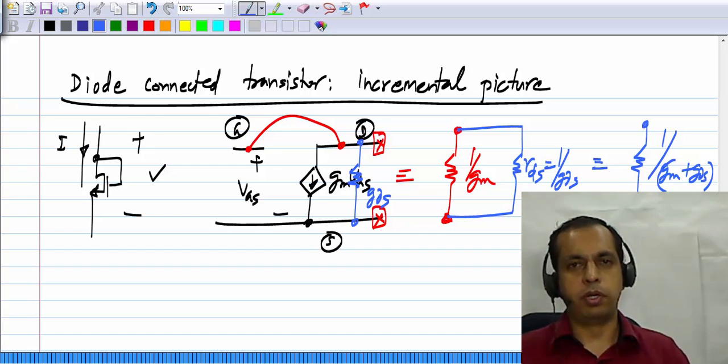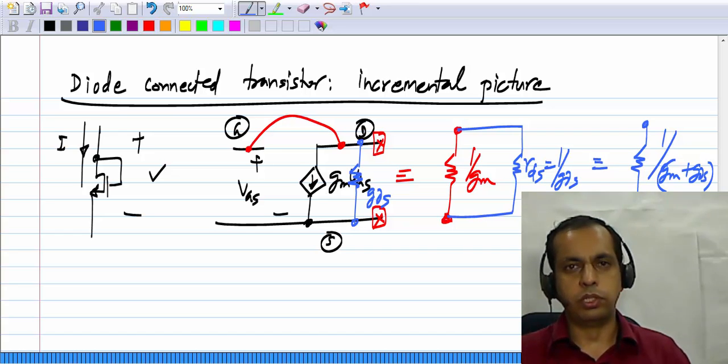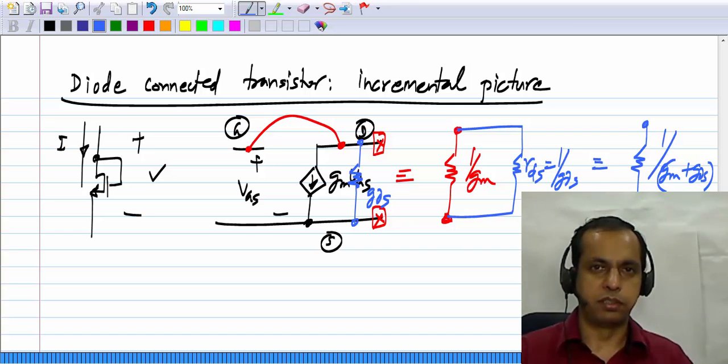And this is a useful result to remember. You do encounter the diode connected transistor in a lot of situations in electronic circuits, and it is useful to know its large signal and small signal behavior.